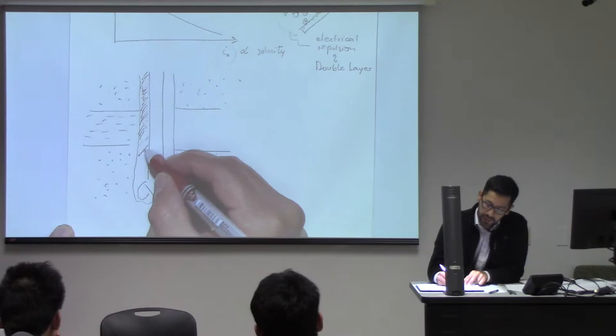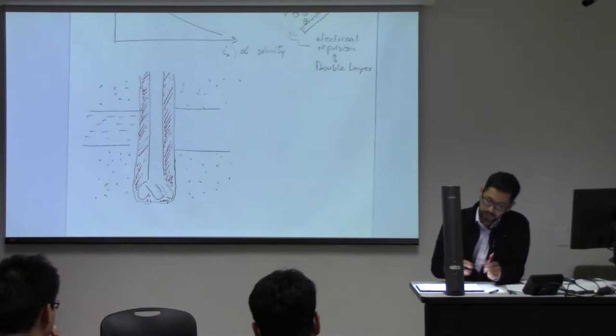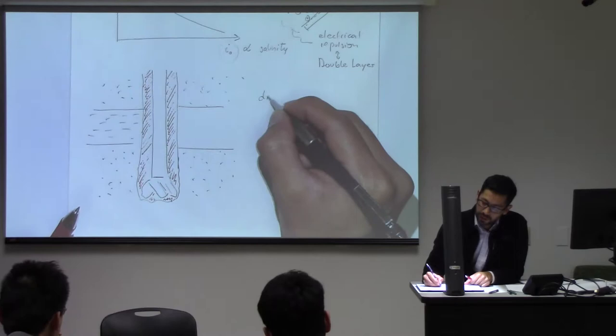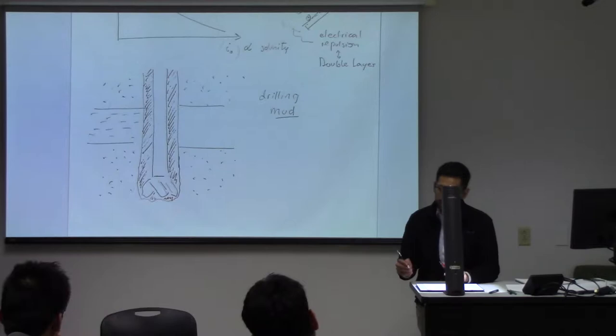What do you use in the wellbore in order to guarantee wellbore stability, and also to cool down the bit? Drilling fluid? Drilling mud? And that drilling mud is made out of what? It's a drilling mud, so what is that mud made of?